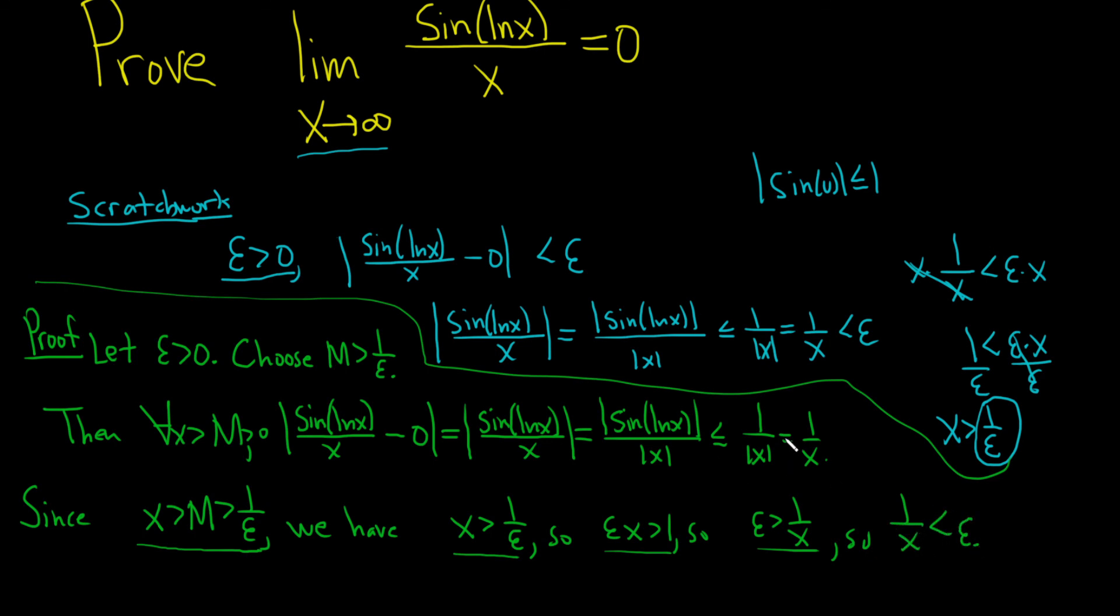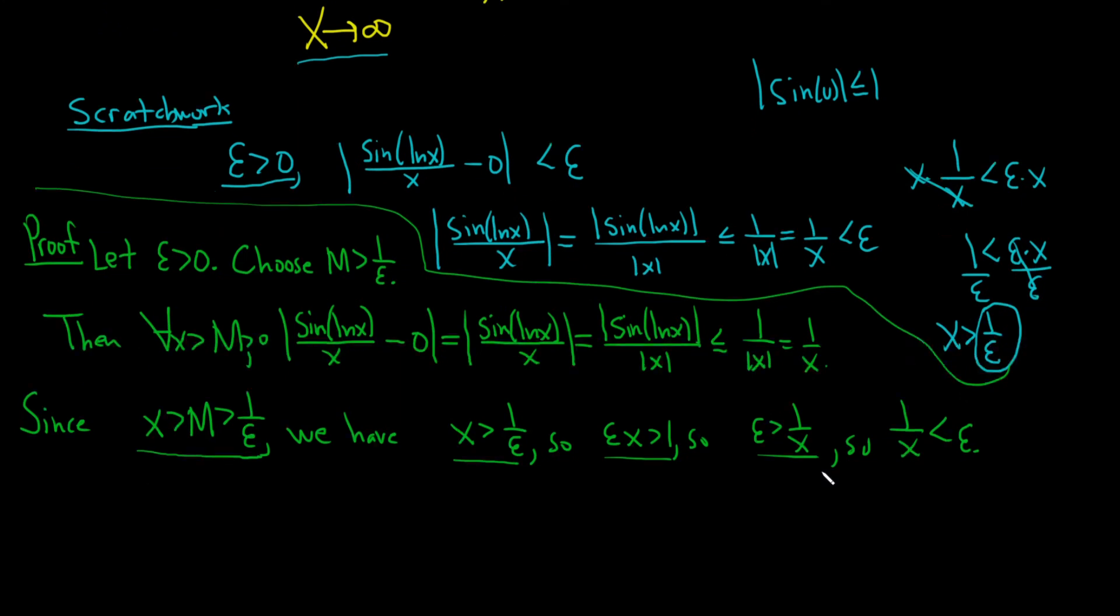But don't you finish your proof here, right? Go back and just restate what you did. So thus, let's just say it again. For all x bigger than m, just for clarity, and I'm going to go from here. Sine of the natural log of x over x minus 0. We know this is less than or equal to 1 over x, right? And we know that this is less than epsilon. And that completes the proof, right?